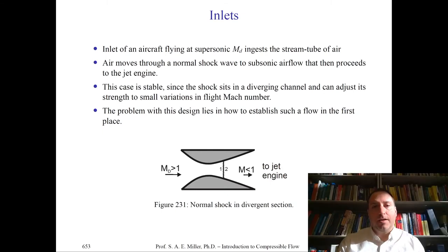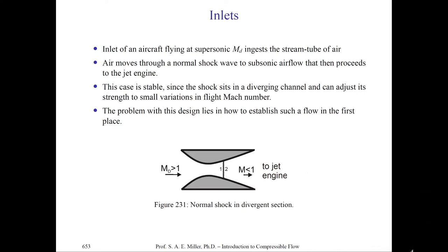If unstart does happen, the engine must restart to put the shockwave back in its proper position — at least a normal shockwave for this idealized engine right after the throat A_D* of the inlet diffuser. Remember, an inlet of an aircraft flying at supersonic Mach number will ingest a particular stream tube of air; the remaining air must go around the aircraft to create lift. The air will move through a normal shockwave and always become subsonic, then proceed to the jet engine. This situation is stable since the shock sits in a diverging channel and can adjust to small Mach number variations — this is what occurs in aircraft like the Sabre and the MiG-17, where a shockwave stands in the divergent part of the inlet.